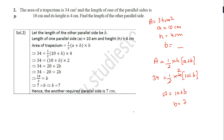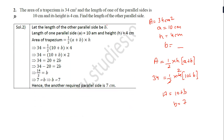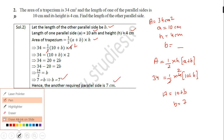Now let me show the proper way to write this. Length of one parallel side is 10, length of the other parallel side is b, height is 4. Area of trapezium: half into (a plus b) into h. So 34 equals half into (10 plus b) into 4. Opening the bracket: 34 equals 20 plus 2b. So 34 minus 20 equals 2b, therefore b equals 7 centimeter.